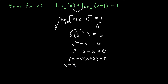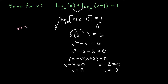Setting each factor equal to zero: x minus 3 equals 0 gives x equals 3, and x plus 2 equals 0 gives x equals negative 2. Remember when we solve a log equation we need to check answers in the original to avoid domain problems — we can only take logarithms of positive numbers. Plugging in x equals 3, we get log base 6 of 3 plus log base 6 of 2, both positive logs, so x equals 3 is valid.